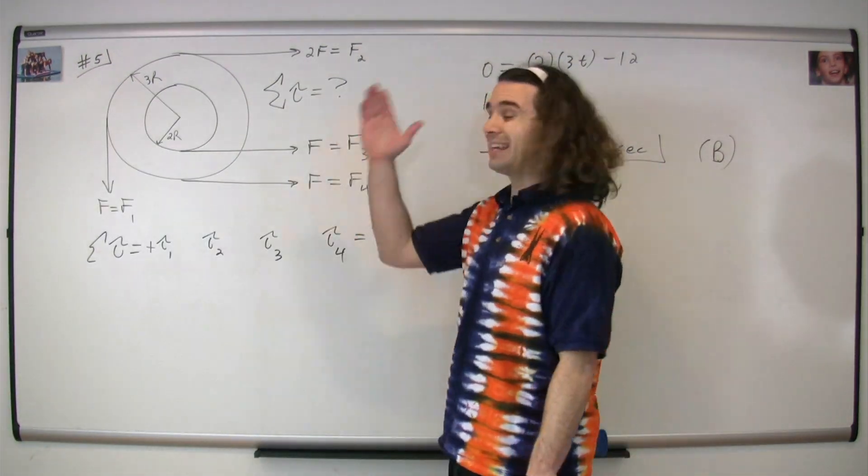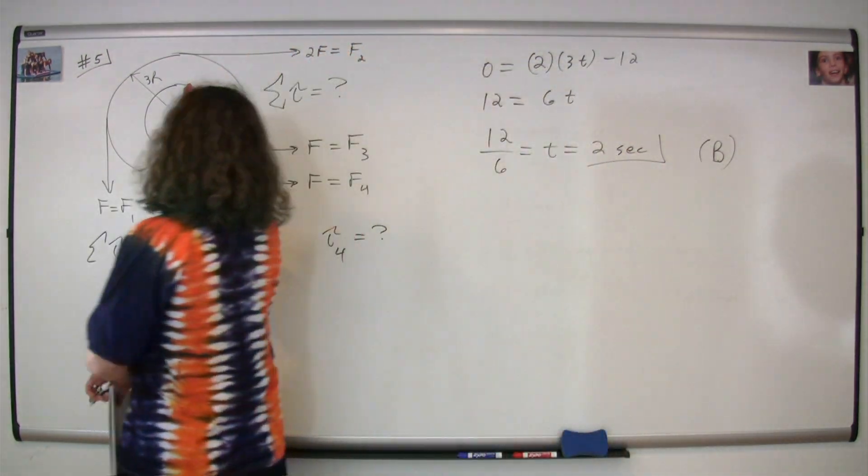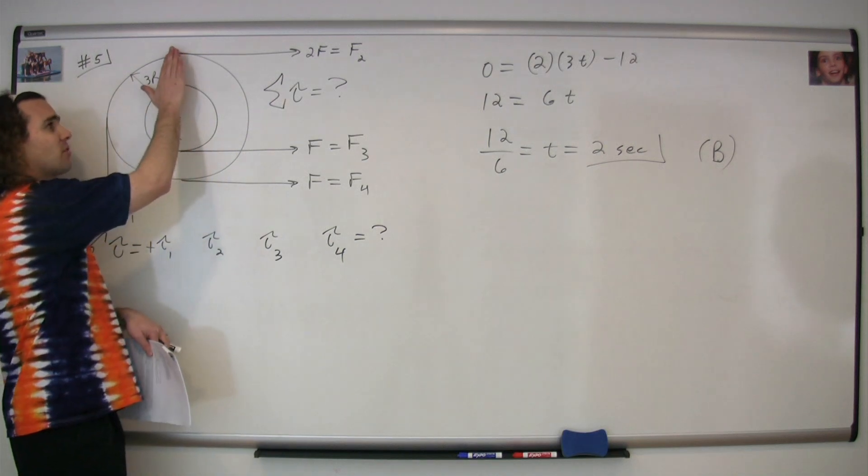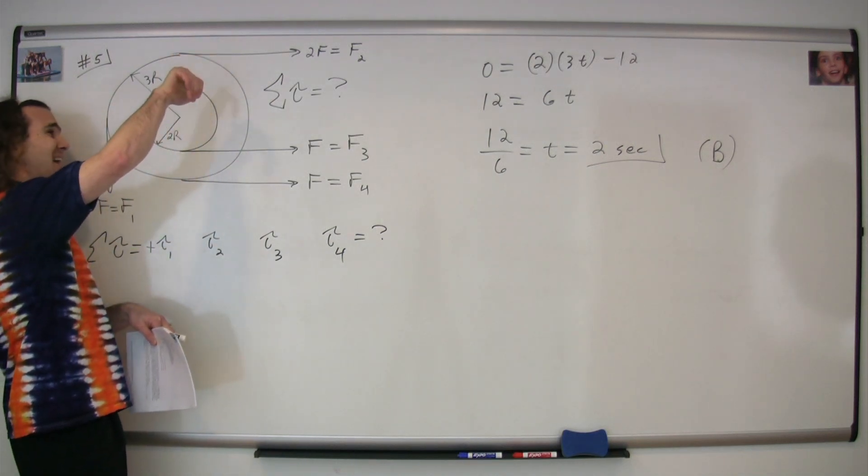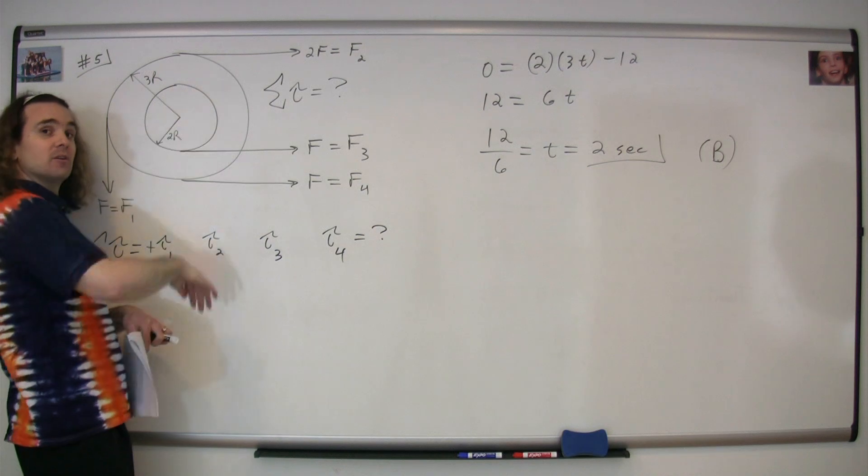For the torque due to force two, again, we start at the axis of rotation. We point our fingers along the lever arm. We curl our fingers along the force and our thumb points into the board, which is negative.